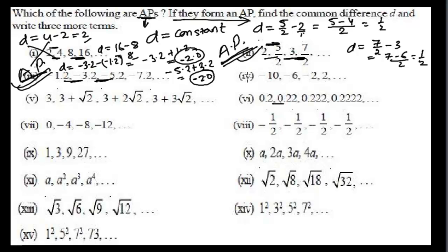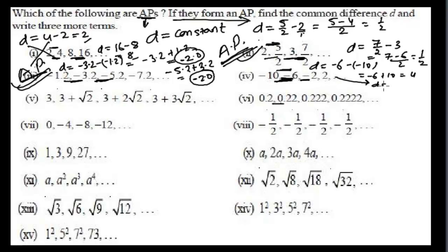The fourth one: -10, -6, -2... The common difference is -6 minus (-10) equals -6 plus 10 equals 4. Checking: -2 minus (-6) equals -2 plus 6 equals 4 again. Since the common difference is 4 throughout, this is an arithmetic progression.